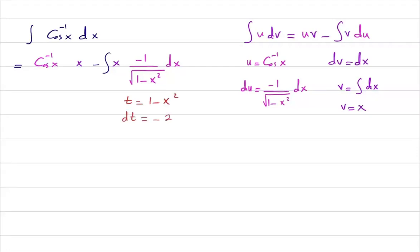So your integral can be written as inverse cosine of x times x and then you have a negative sign, so let us keep it as it is. And here I'm going to multiply it by 2 and divide it by a half.